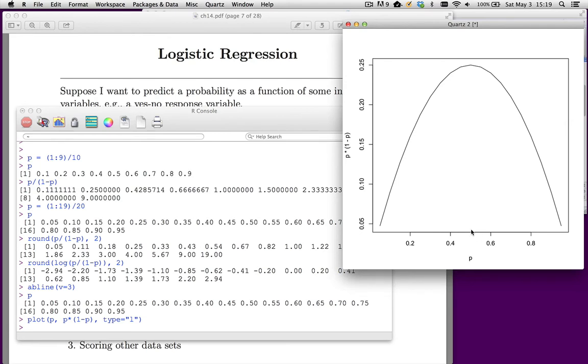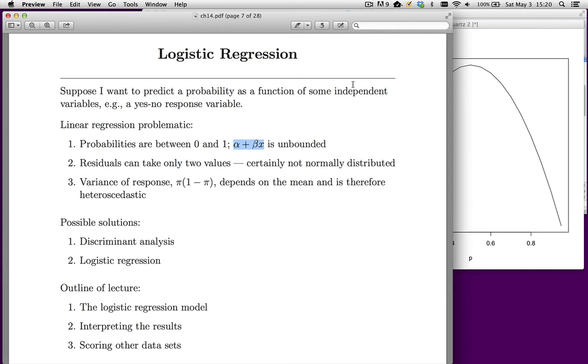What this says is the variance is greatest when the probability is 0.5. As you approach 0 or 1, the variance becomes much smaller. So the residuals become much more homogenous. So those are the problems that we have using linear regression whenever we have a dichotomous outcome. So what do we do?